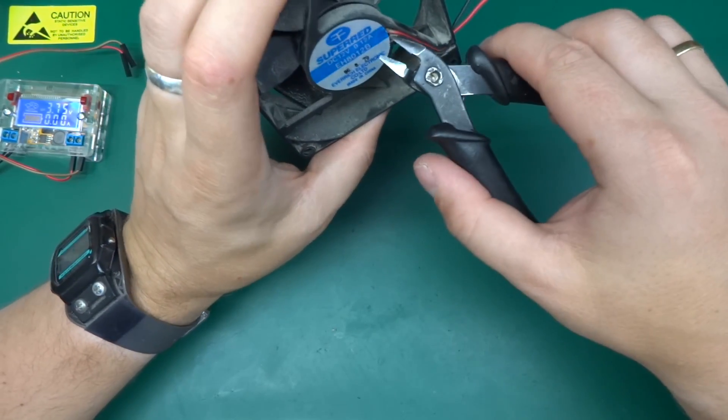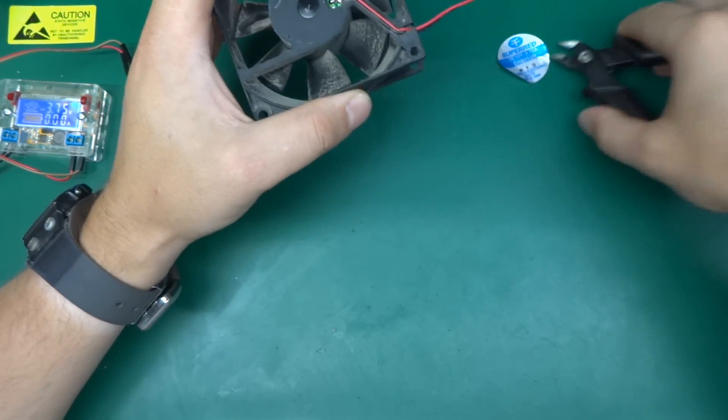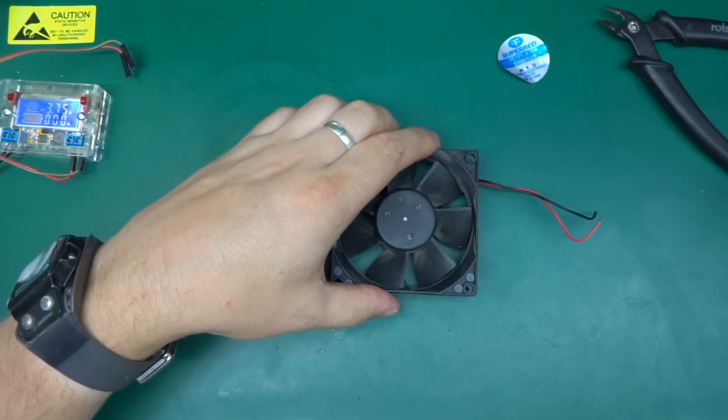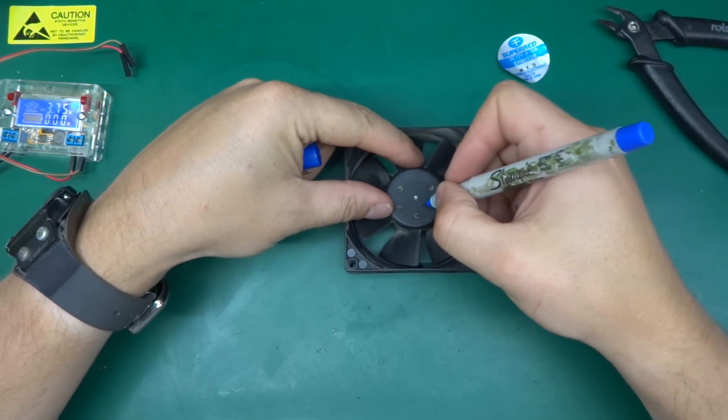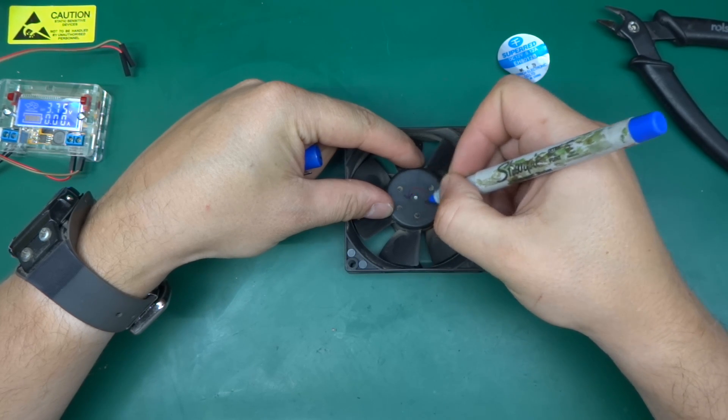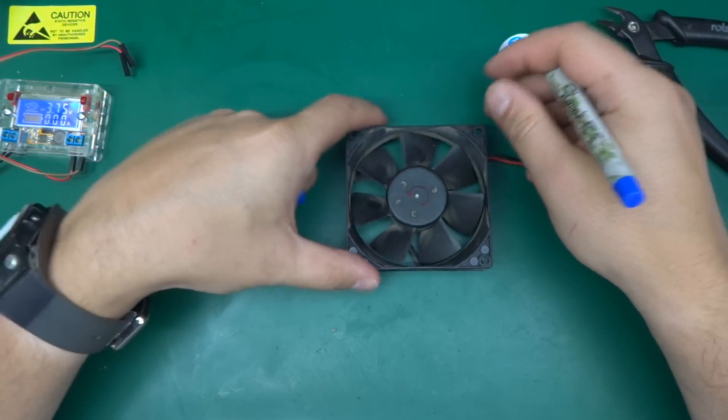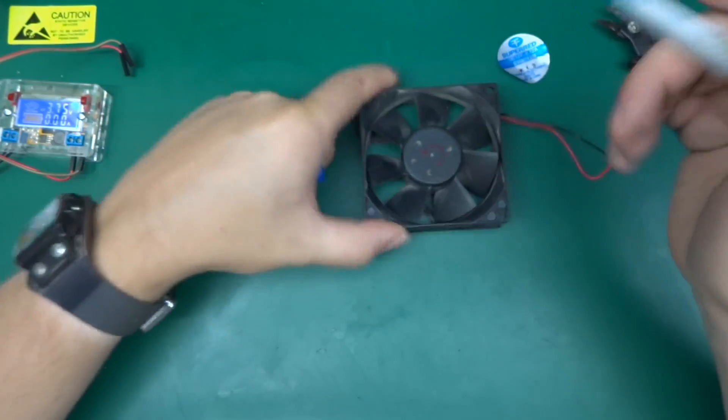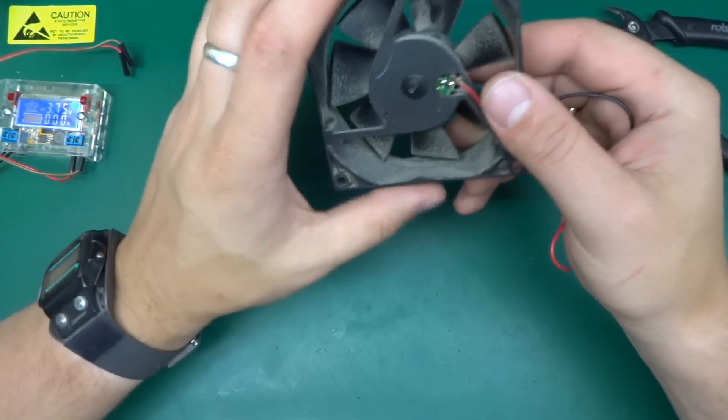So let's begin by taking off the plastic sticker. Actually let's begin by marking down which way it rotates. So it was going this way. So we know whether we achieved what we wanted.